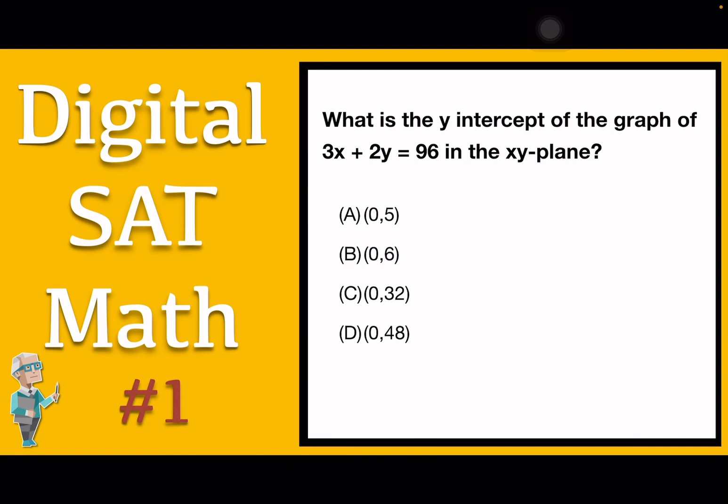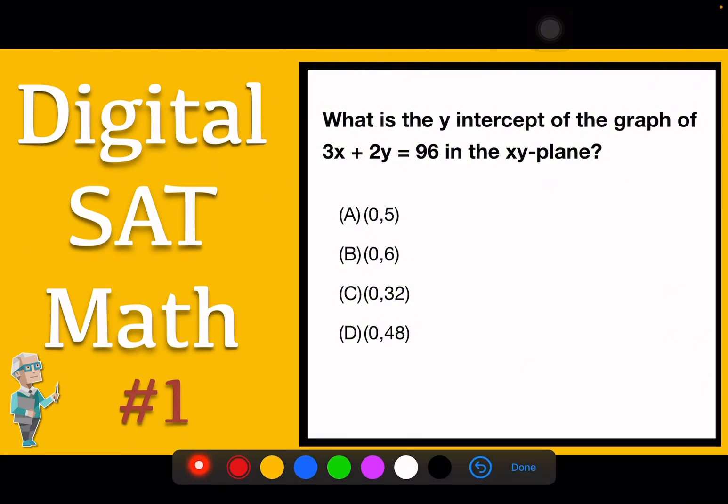So for today, let's get started by reading that question. This problem said, what is the y-intercept of the graph of 3x plus 2y equals 96 in the xy-plane? When we look at the options, all the options start with 0 comma something. The question asks for the y-intercept of the graph.